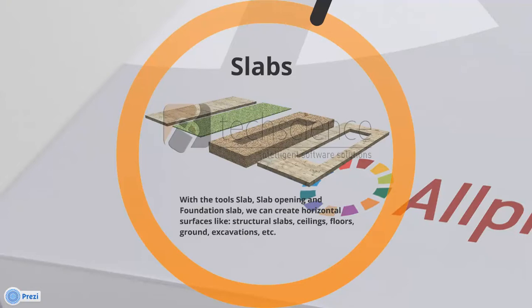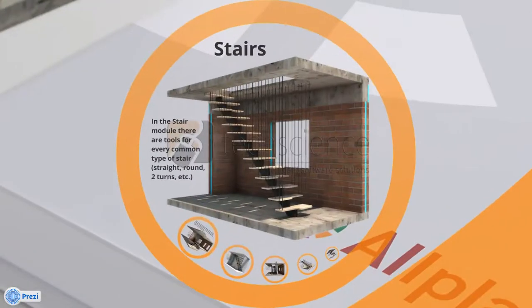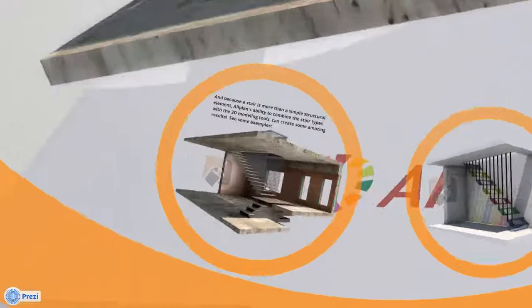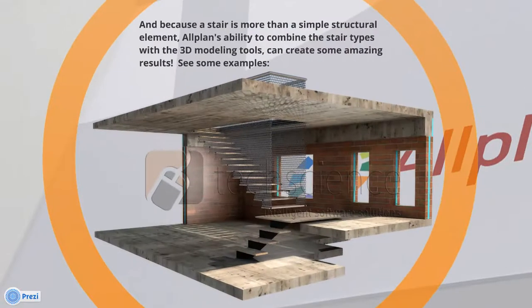Slabs: with the tools slab, slab opening, and foundation slab, we can create horizontal surfaces like structural slabs, ceilings, floors, ground excavations, etc. In the stair model there are tools for every common type of stair — straight, round, two-turn, etc. And because a stair is more than a simple structural element, Allplan's ability to combine stair types with 3D modeling tools can create some amazing results.